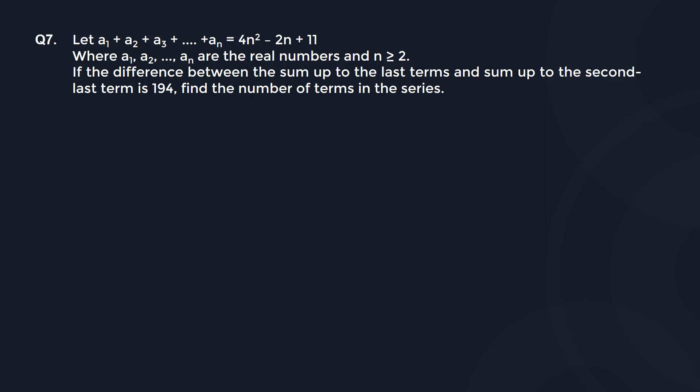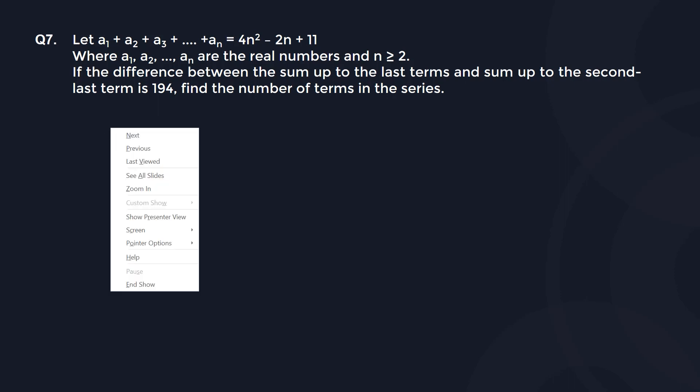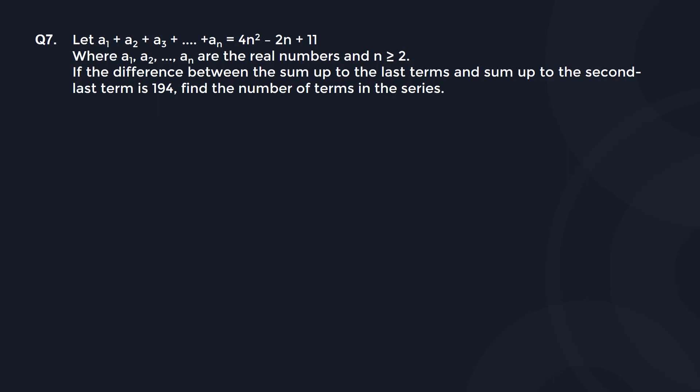Moving on to question number seven. This is a progressions question that says: let a1, a2, up to an be equal to 4n squared minus 2n plus 11. So you have the value of Sn given here — Sn is 4n squared minus 2n plus 11.